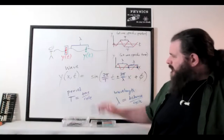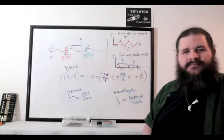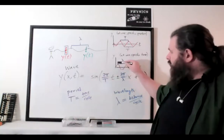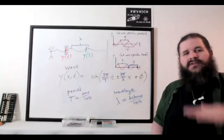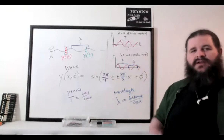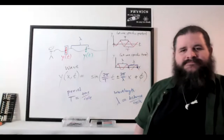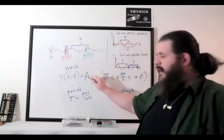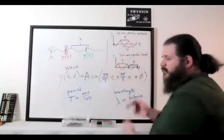One other thing we need: a typical sine function only goes from negative one to positive one. But waves can go up and down as far as you want. So we put a multiplier — the amplitude A — outside the function. A multiplier outside the function stretches and compresses vertically, whereas the multipliers inside the function adjust the wavelength or period. So the amplitude tells you how far the wave goes from equilibrium to its maximum.